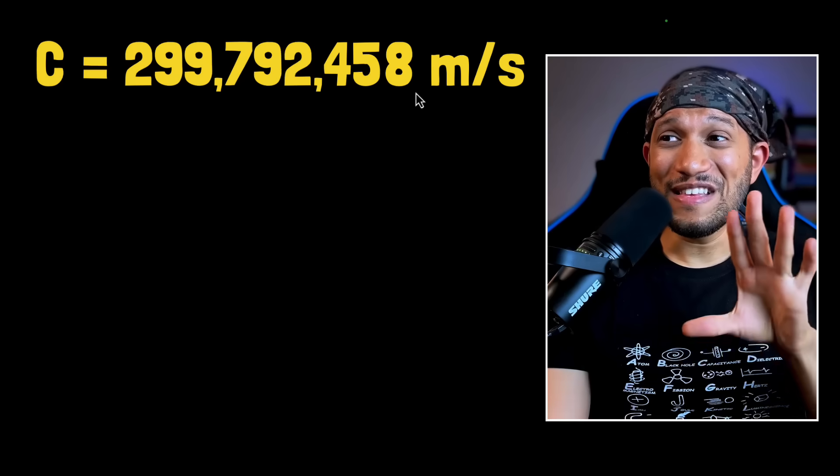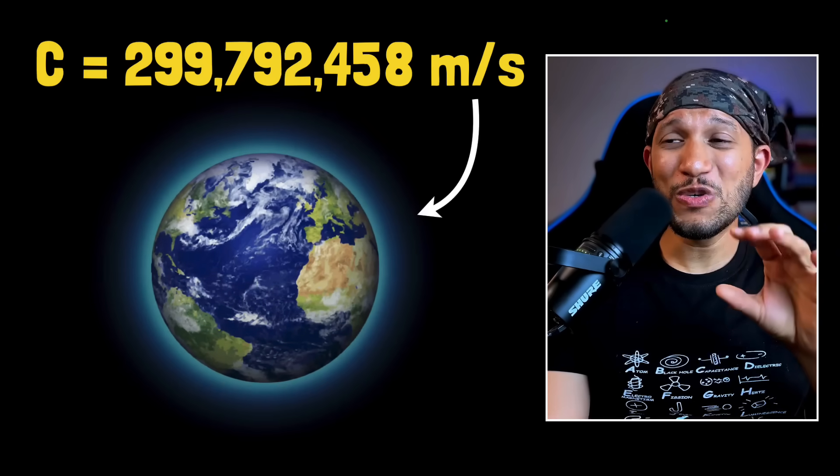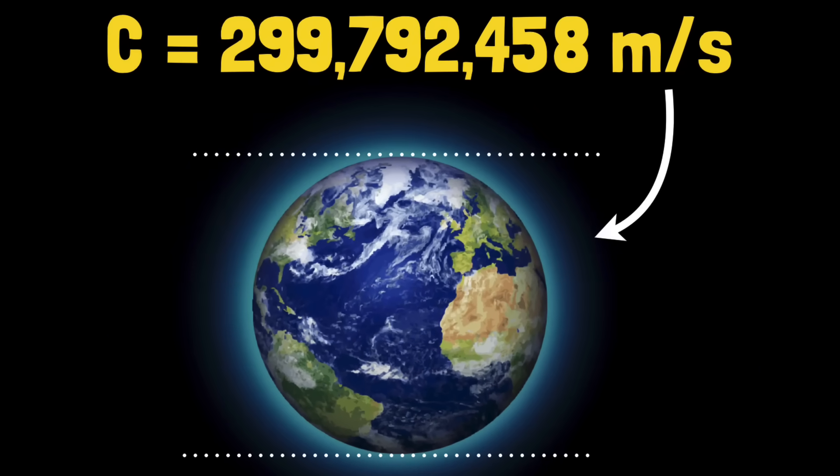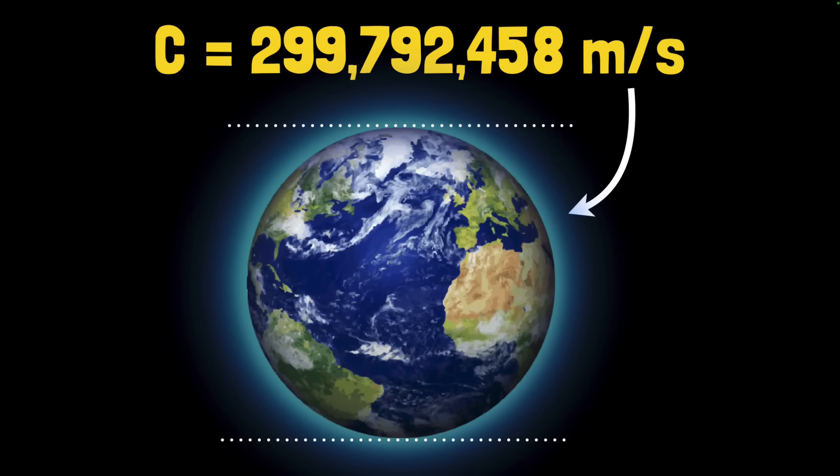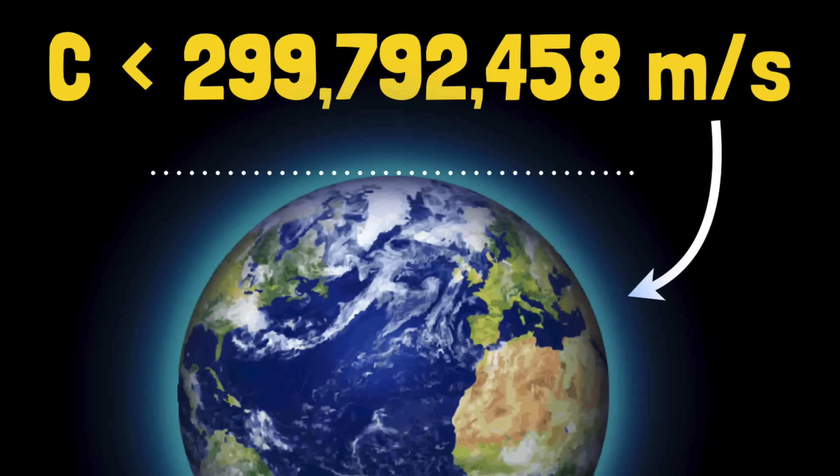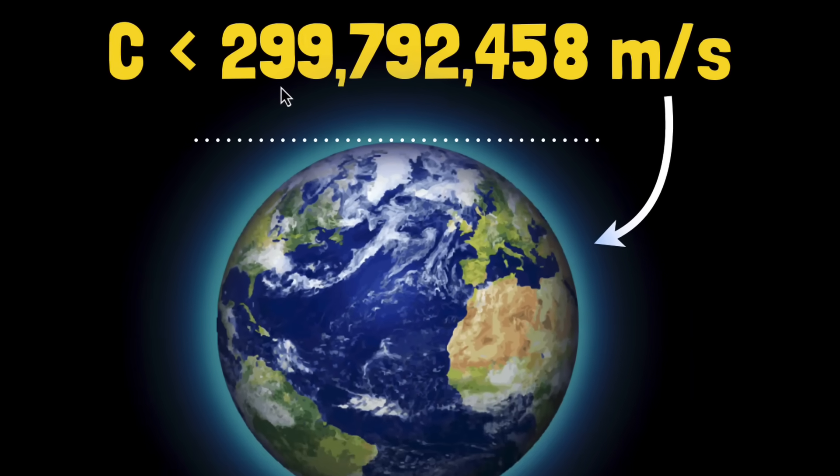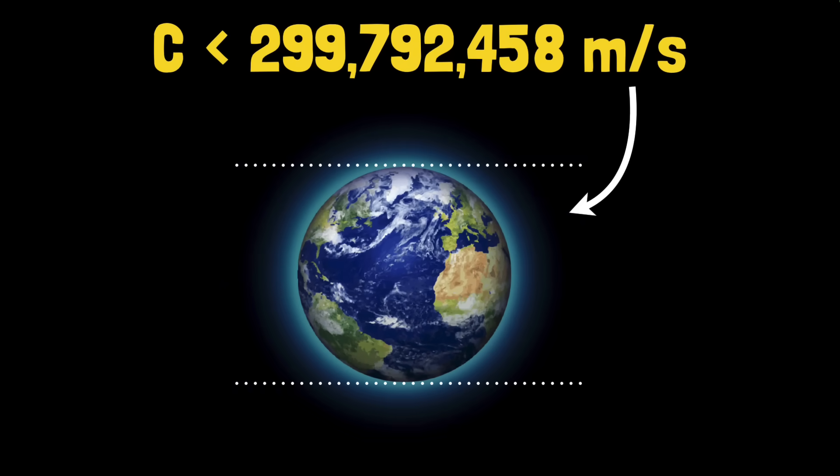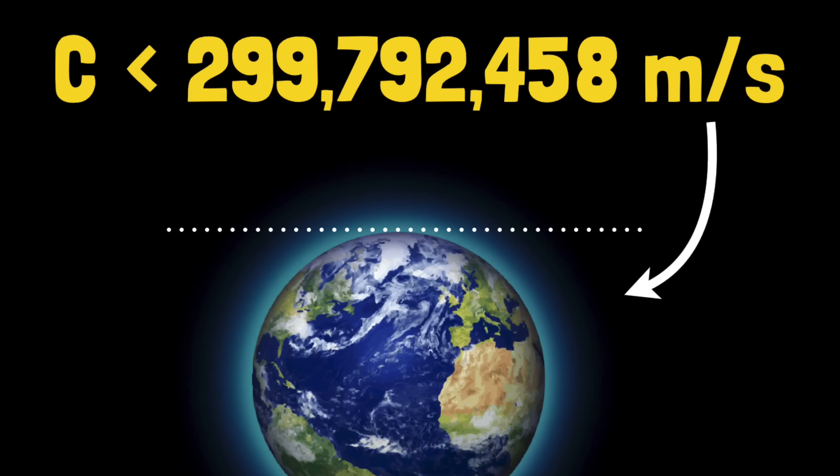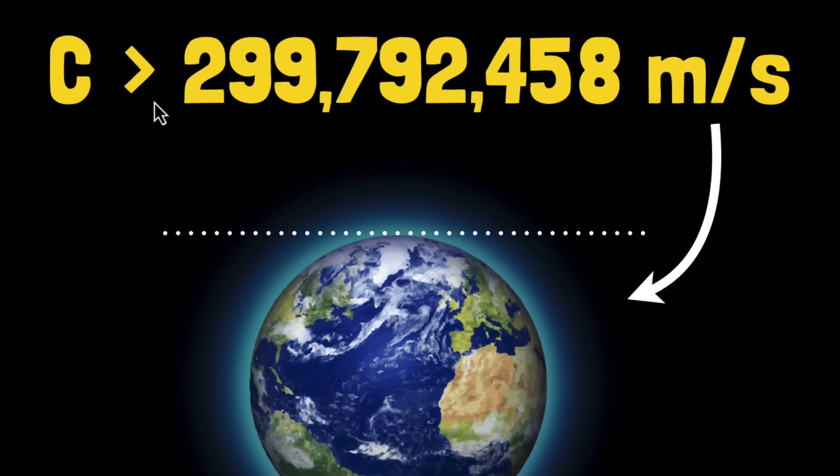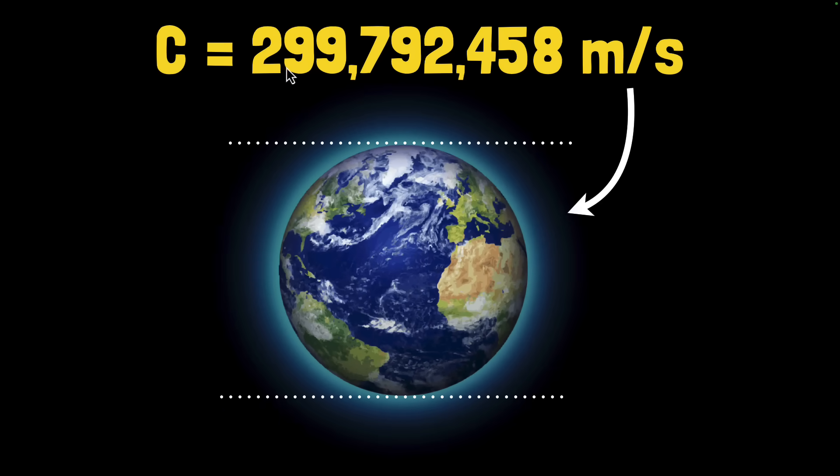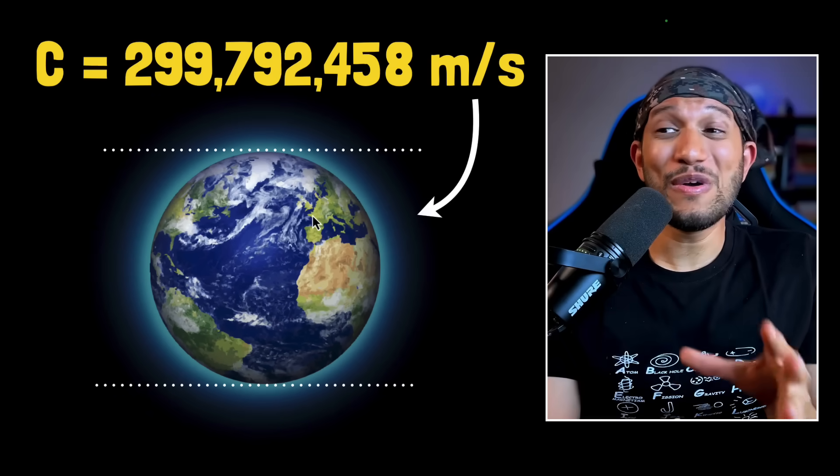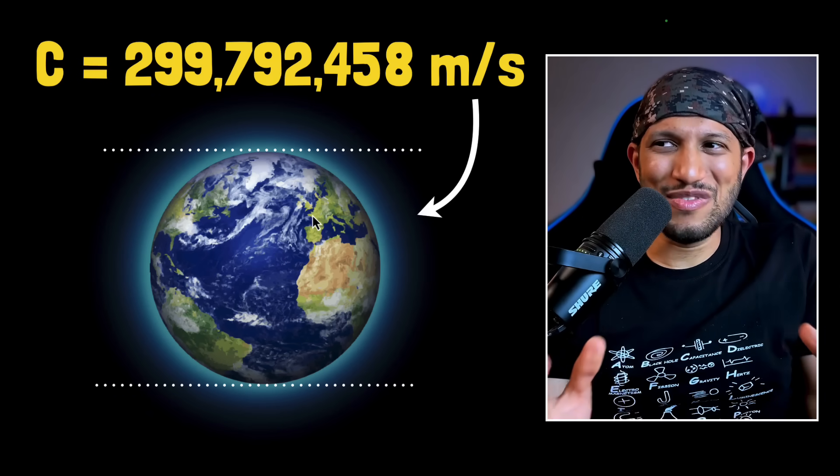In fact, what I realized is that this number is directly connected to the Earth's size. I kid you not. If the Earth was slightly bigger than it is right now, then the value of the speed of light in vacuum would have been smaller. And if the Earth was smaller than it is right now, then the value of the speed of light would have been bigger.